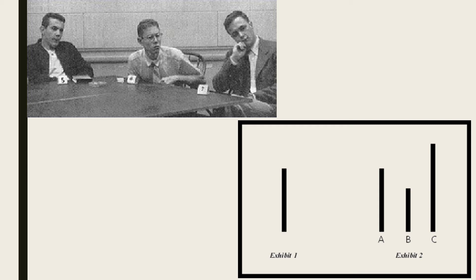In Asch's experiments, people were in what they thought was a perception experiment, making judgments about the lengths of lines. For example, you would look at the line on the far left side and pick out which of three lines matched it most closely in length. The tasks were pretty easy — it's easy to see that line A is a good match for the stimulus line. If people were just making these judgments on their own, they got it 100% correct.